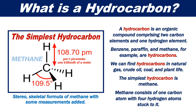We can find hydrocarbons in natural gas, crude oil, coal and plant life. The simplest hydrocarbon is methane. Methane consists of one carbon atom with four hydrogen atoms stuck to it.